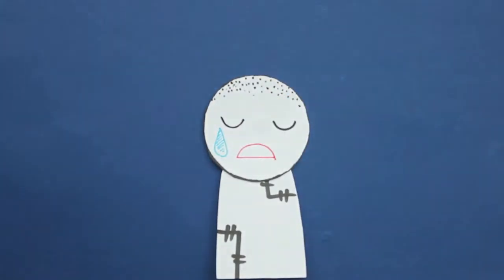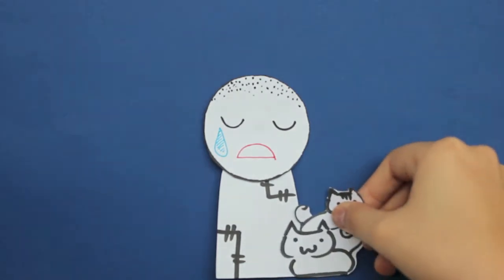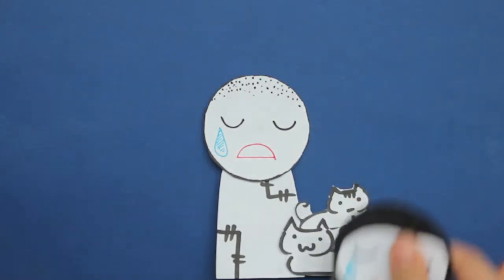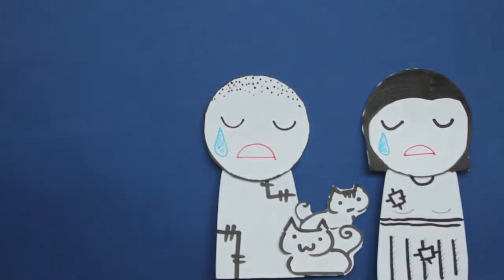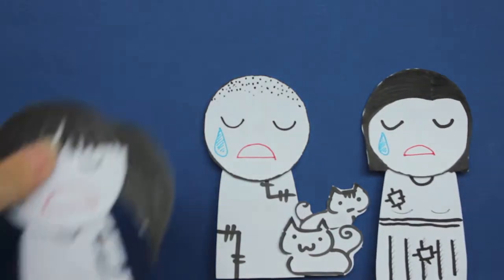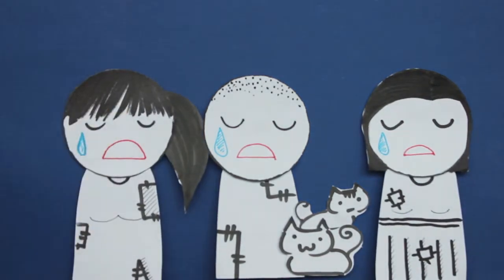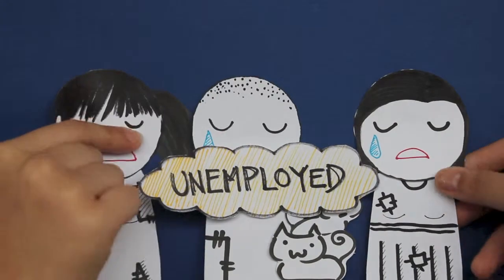This is Bob. He likes cats. This is Lisa. She hates cats. This is Sally. She doesn't care. But the one thing they have in common is that they are unemployed.